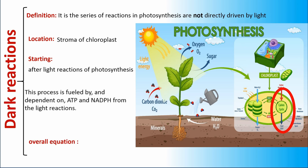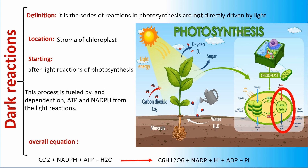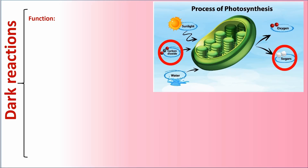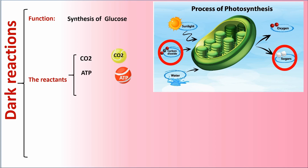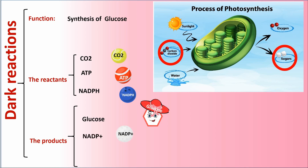The overall equation of the dark reaction is: CO₂ + NADPH + ATP + H₂O → C₆H₁₂O₆ + NADP⁺ + proton + ADP + phosphate. The function of dark reactions is the synthesis of glucose. The reactants are CO₂, ATP, and NADPH, and the products are glucose, NADP⁺, and ADP.